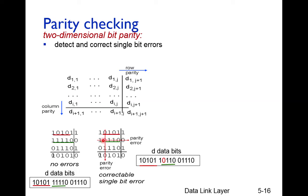Since that intersecting bit has an error, and its current value is zero, we know it should be one and correct it to one. This is the advantage of two-dimensional bit parity: it can not only detect where the error is, by marking the wrong row and wrong column and finding their intersection, but it can also correct that error.